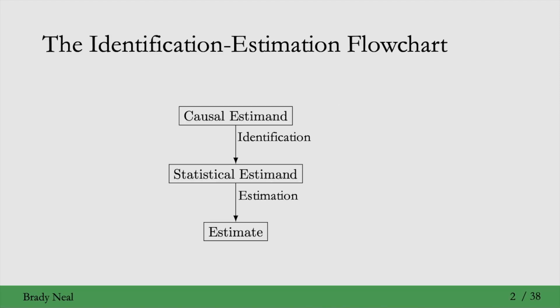To get this lecture started, remember the identification estimation flowchart. We saw this in week two, that if we start with a causal estimand, we can then turn that into a statistical estimand through the process of identification, and then turn that into an actual number, an estimate, through the process of estimation.